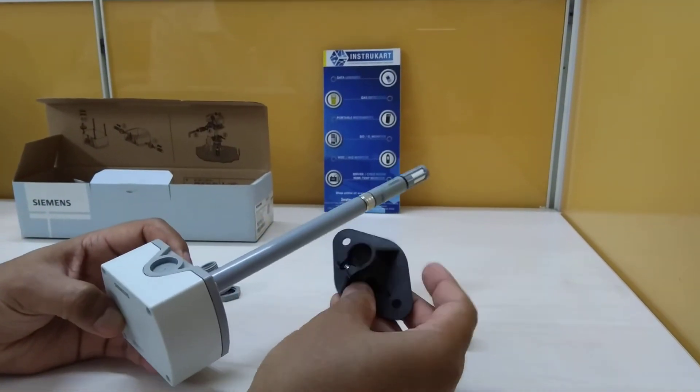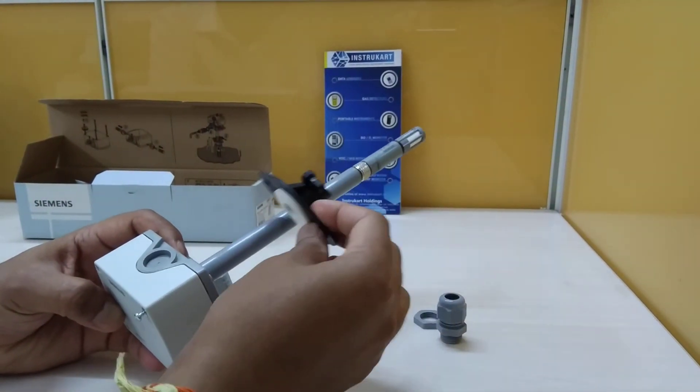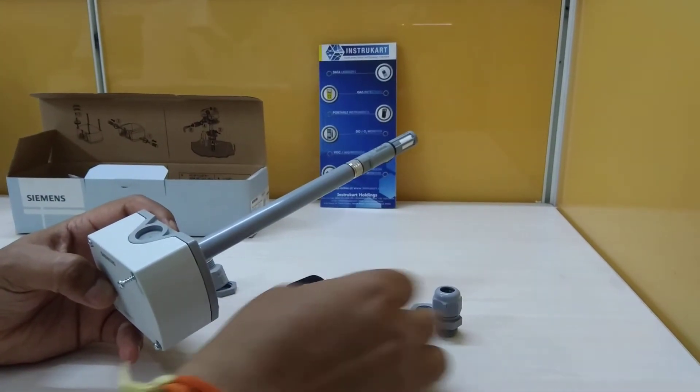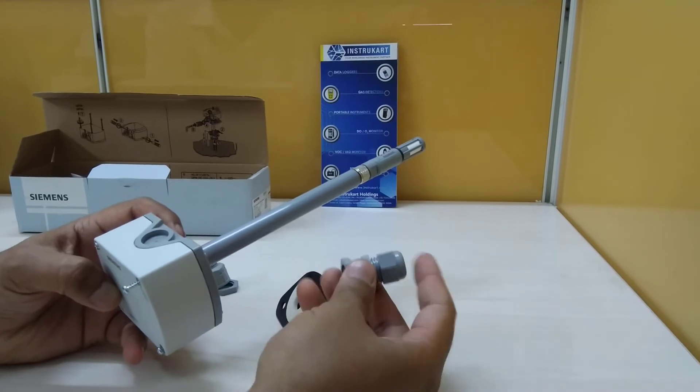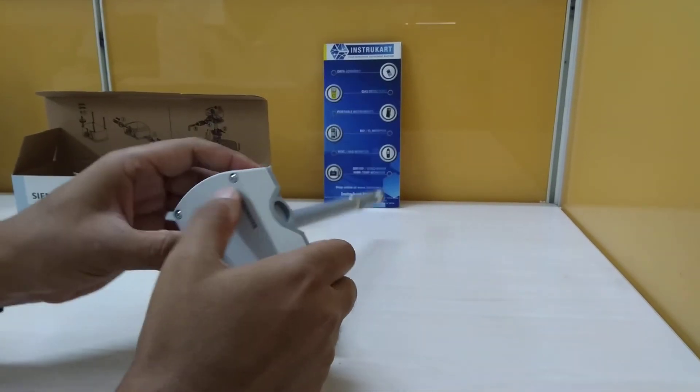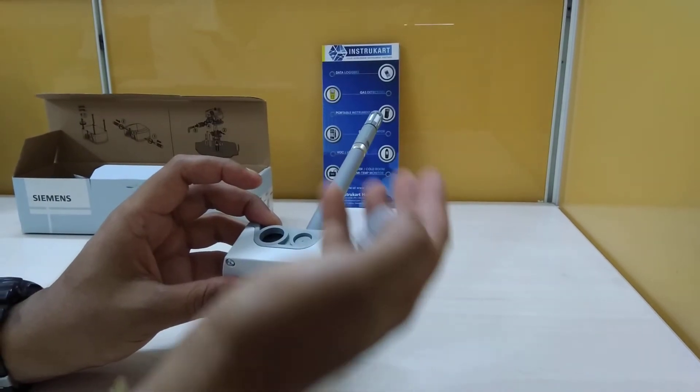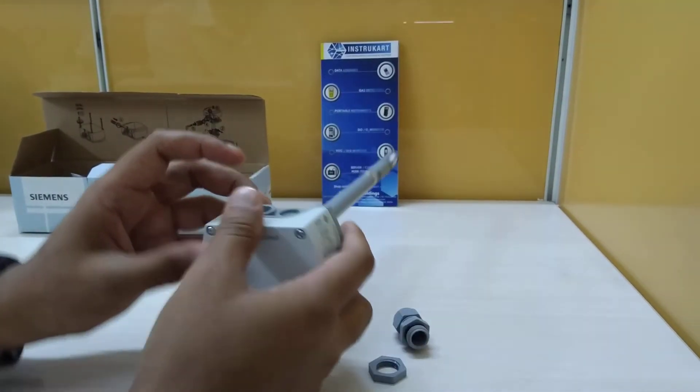Other standard accessories would be this clamp fitting where you can want to fit it inside the duct for easy fitting. This is the gland which you will be using probably if you take the 4 to 20 milliamps output and this is a conduit.